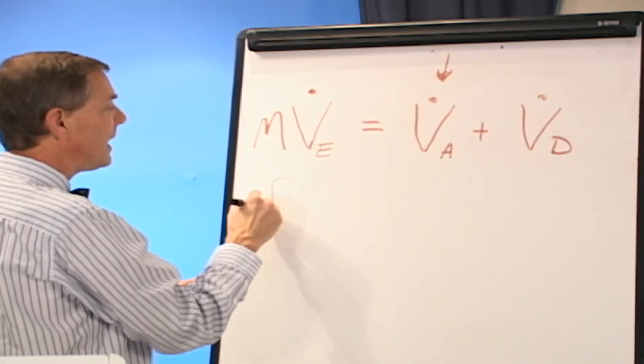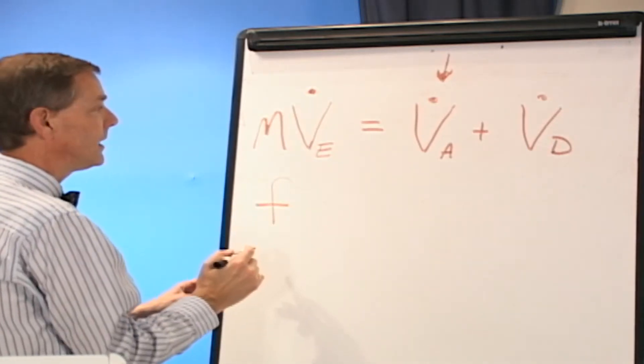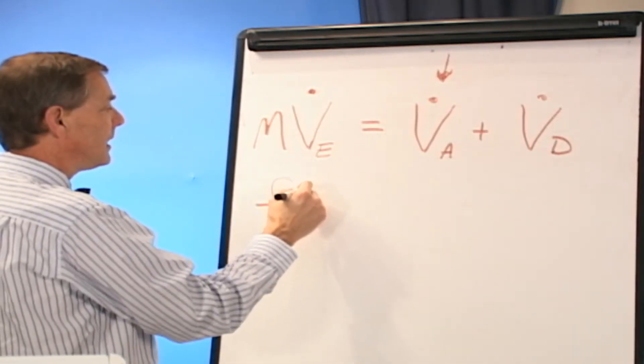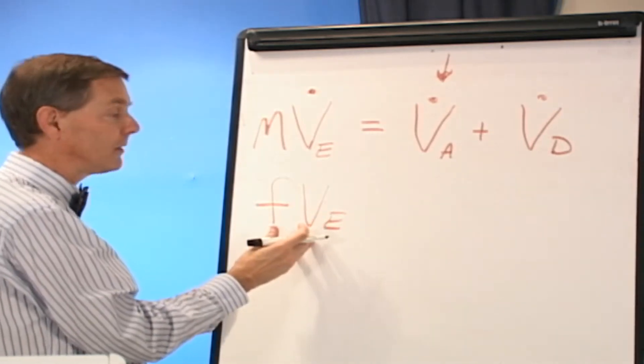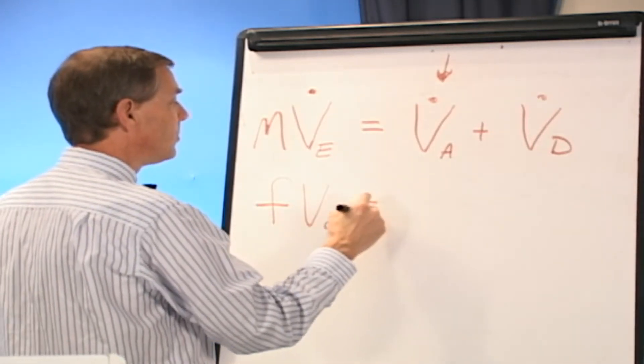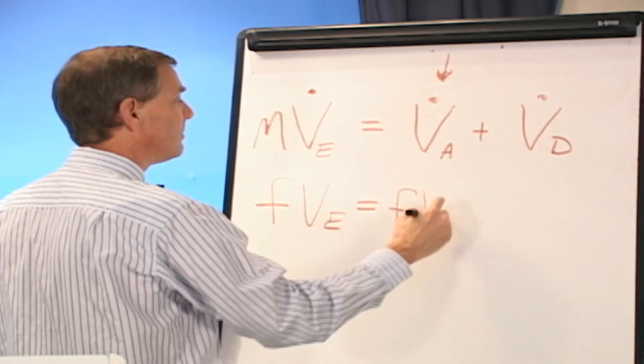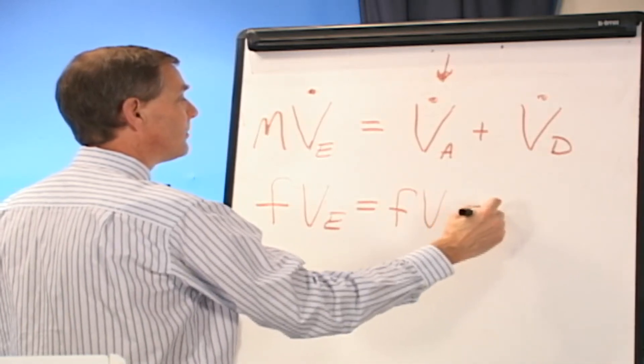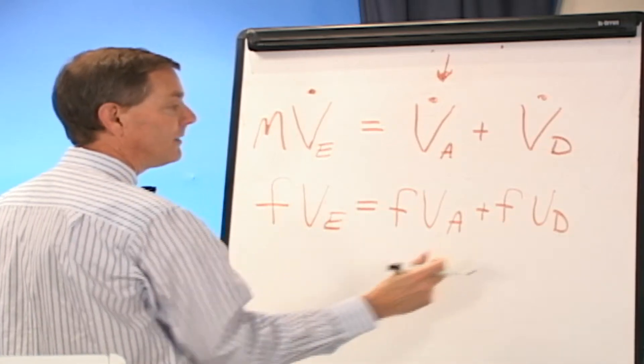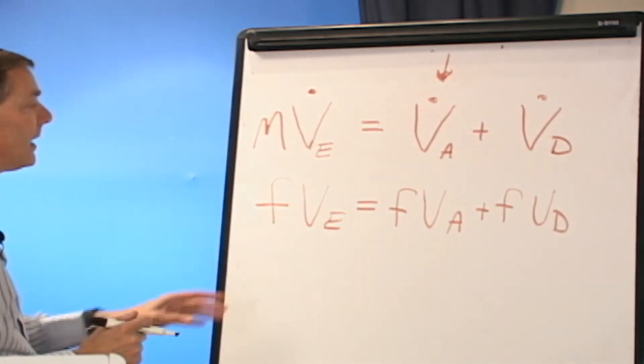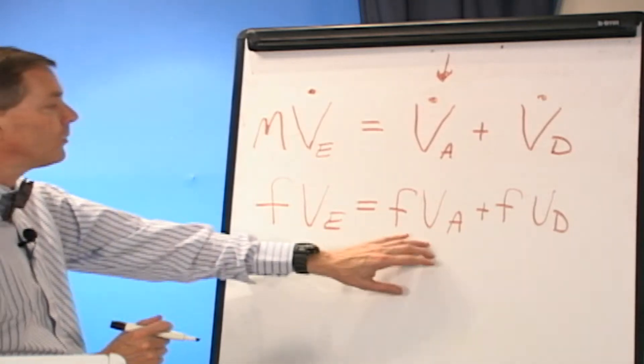So we can convert this to volumes by breathing frequency, the rate at which I breathe. Frequency times the exhaled volume, which will be tidal volume at rest, will equal the frequency times the alveolar volume plus the frequency times the dead space volume, the conducting airway volume.